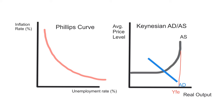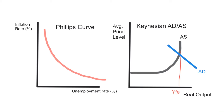Through government policy — an increase in spending or reduction in taxes — government can raise AD. As we move up this curve, we lower unemployment, but at a cost: we're moving closer and closer towards full employment output while also putting pressure on the price level. On the Phillips curve, we've driven down the level of unemployment, moving along this axis, but we've raised the inflation rate — that is the trade-off as we move along the Phillips curve.